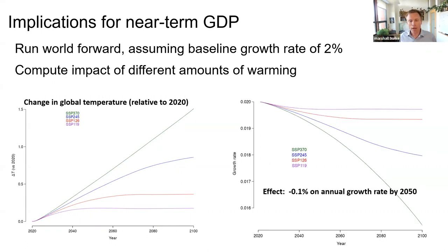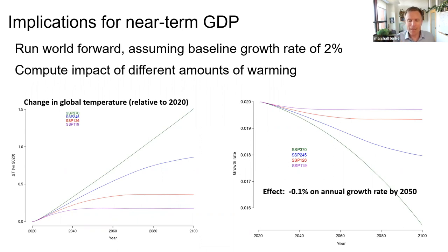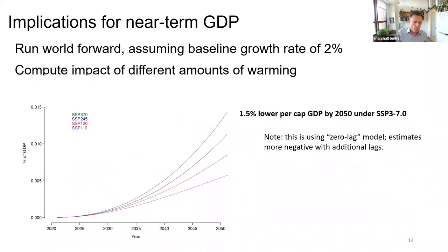Pumping that into our response function, for those interested in 2050: using our zero-lag model — the more conservative model — we find you lose about a tenth of a percentage point of annual growth rate by 2050 every year, so you're growing a tenth of a percentage point slower than you would have been absent warming under what we think of as business-as-usual emissions.